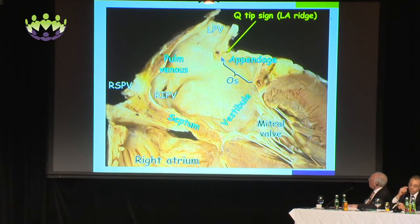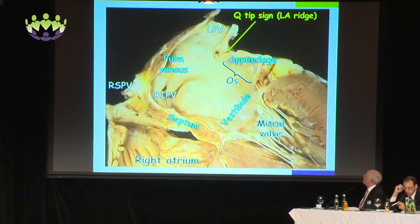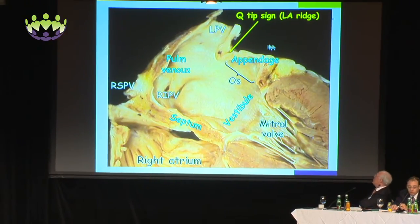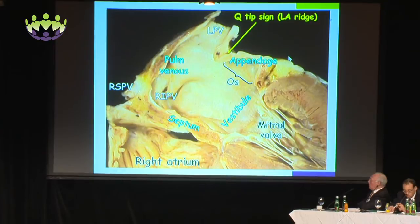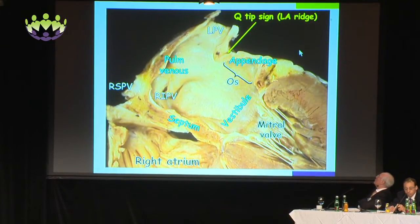And also we have this structure here, which is the infolding of the left atrium — described as the Q-tip sign by the echocardiographers, and termed the left atrial ridge by the electrophysiologists.